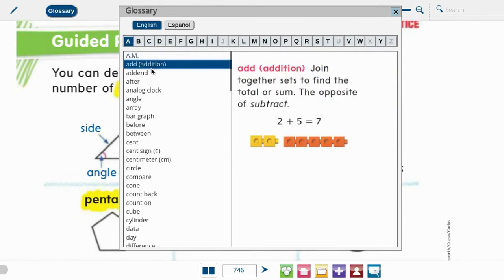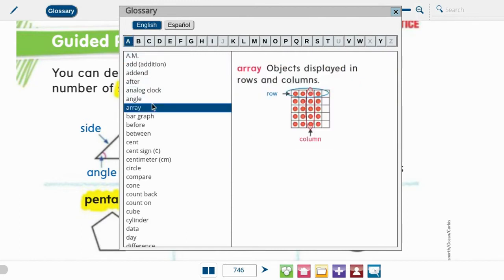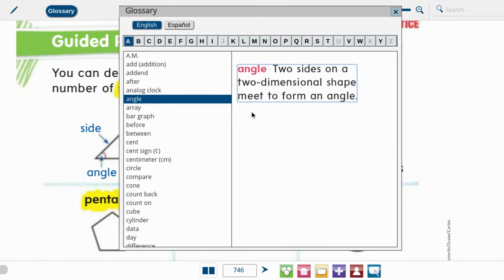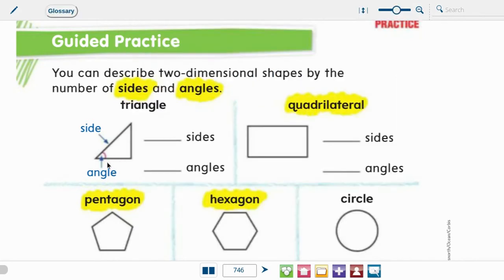And then I want to look up angles. Angle. I know we talked about that the other day, but an angle is two sides on a two-dimensional shape that meet to form an angle. So the side is a line segment. It has to have a beginning and an end for it to be a side. And the angle is when two of those line segments come together, there's a little bit of space. And so this angle is actually the distance between these two. So those are angles.